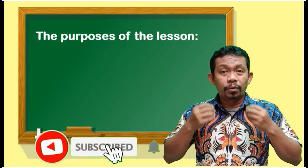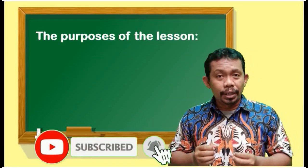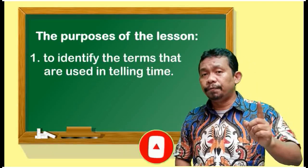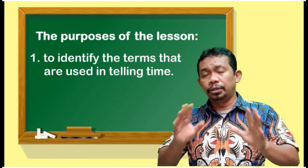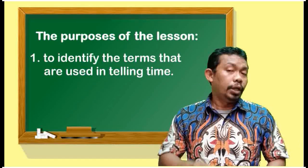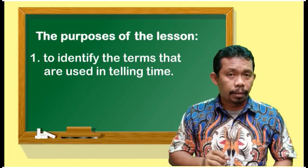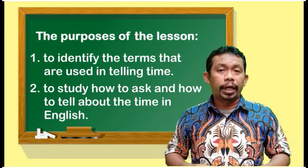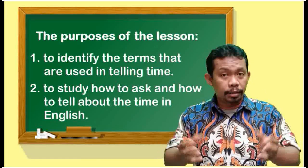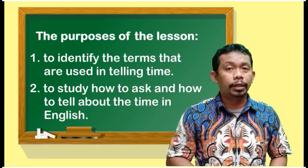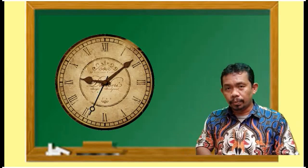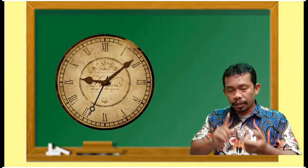The purposes of our topic today are: first, to identify the terms that are used in telling time; second, to study how to ask and how to tell about the time, especially in English. Di jam analog kita mempunyai 3 jarum.